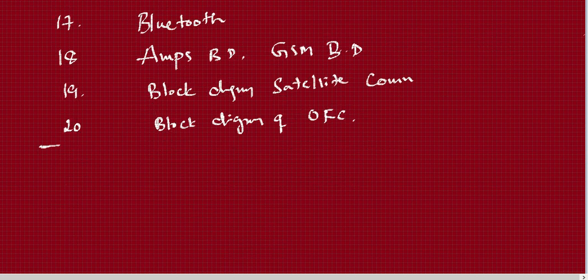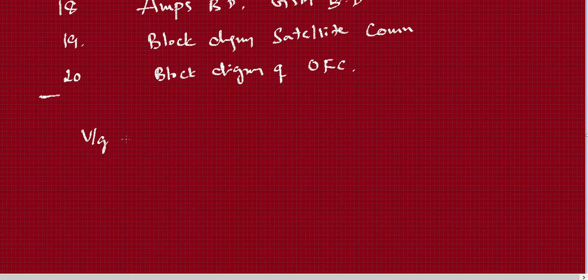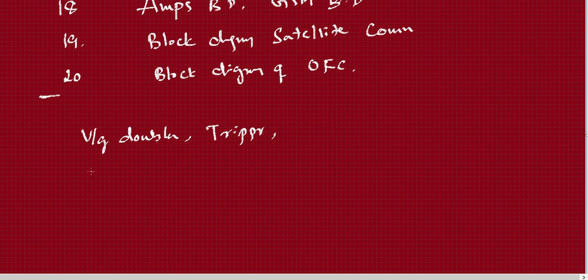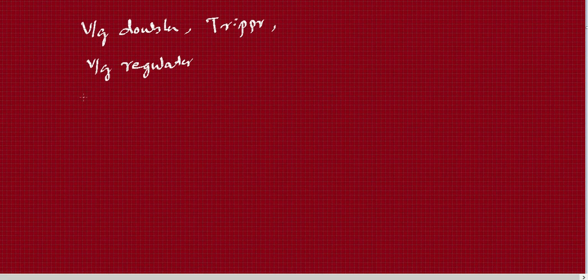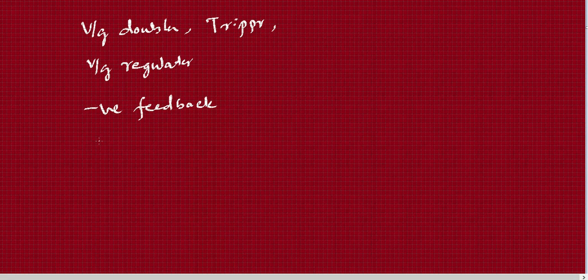Other additional concepts from Module 1 include voltage doubler and tripler. Zener diode as a voltage regulator can also be asked. Negative feedback is another topic to cover.